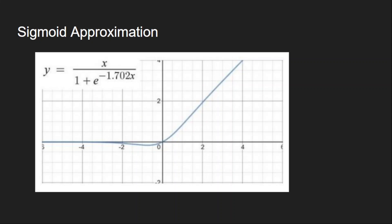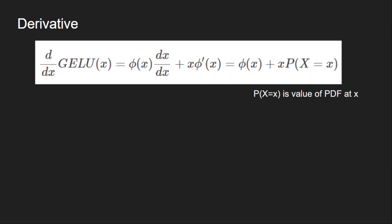With the sigmoid approximation GELU is easy to implement in Python and faster. Looking at the derivative of GELU: since it is a product of x and Φ(x), we apply the product rule. The derivative becomes Φ(x) plus x times the derivative of Φ(x), where the derivative of Φ(x) is the probability density function evaluated at x.